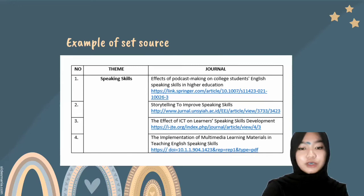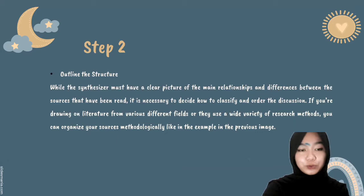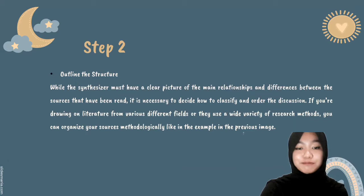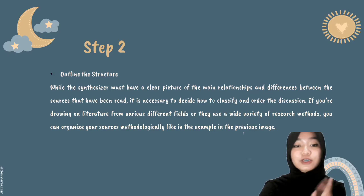Step two is to outline the structure. While synthesizing, you must have a clear picture of the main relationships and differences between the sources you have read. It is necessary to decide how to classify and order the discussion. If you are drawing on literature from various different fields or they use a wide variety of research methods, you can organize your sources by methodology, like the example in the previous image.